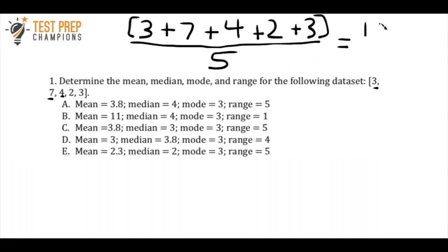So if I add all those numbers up, I get 19. All right, so then I'm going to do 19 divided by 5. So I get 3.8. So the mean is 3.8.